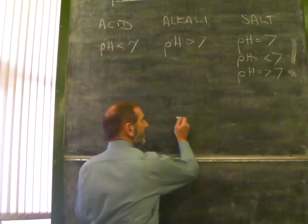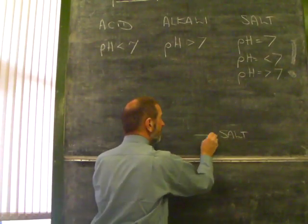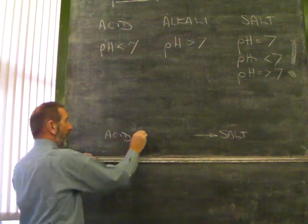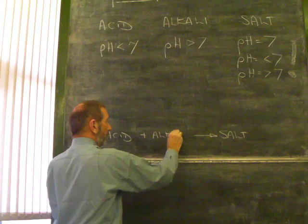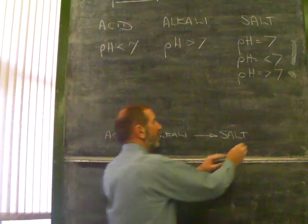You see, we need to ask the question, what is a salt? And what we need to think of a salt is to see it as the product of the reaction between an acid and an alkali. When an acid and an alkali react, we produce a salt, plus water.